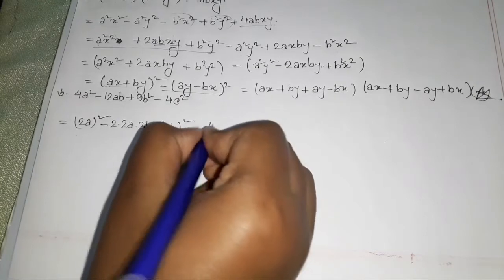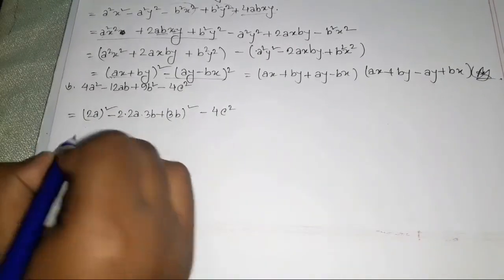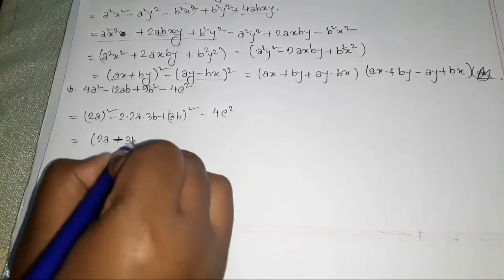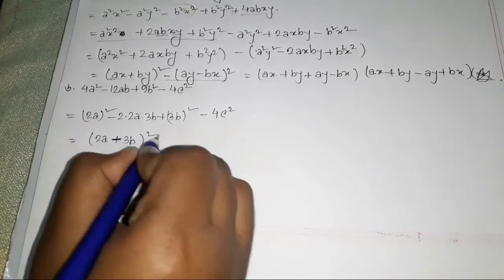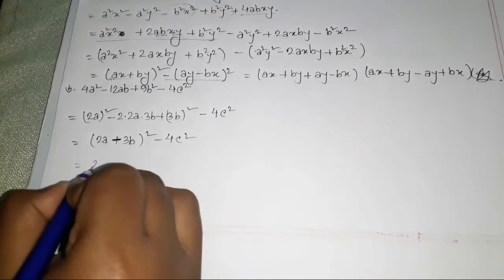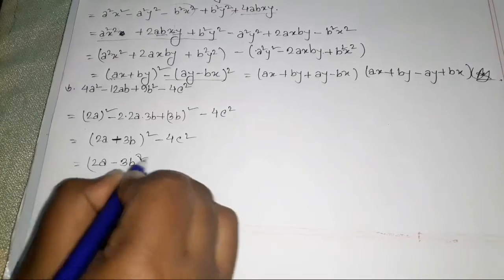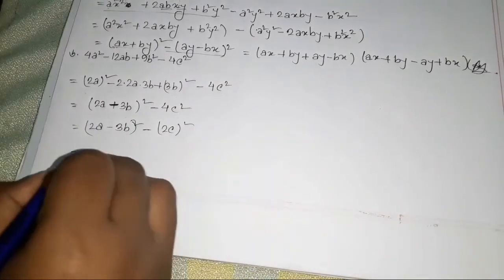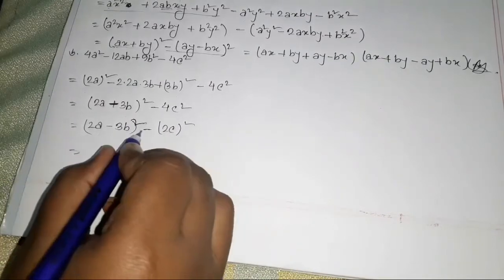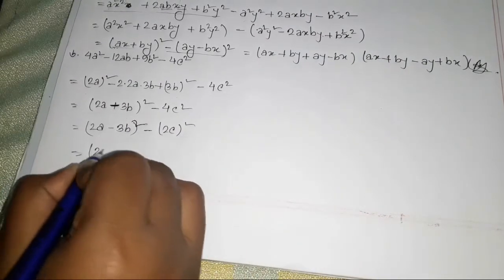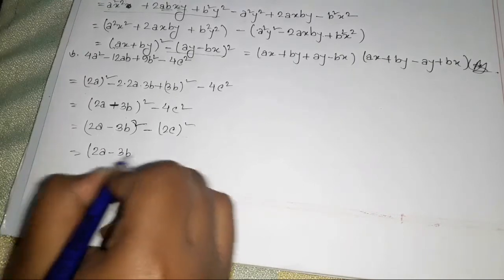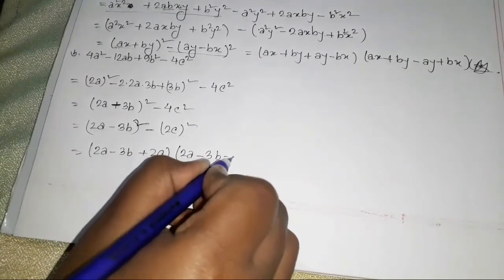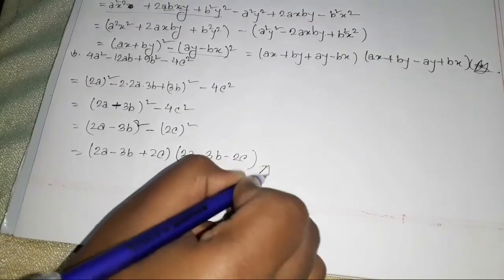This becomes (2a - 3b)² - (2c)², which is a² - b² form. Using a² - b² = (a + b)(a - b), that's our answer.